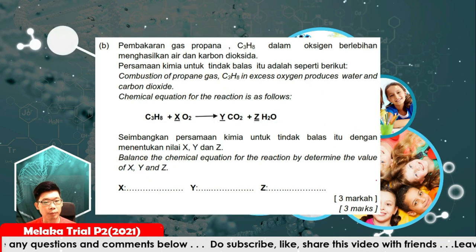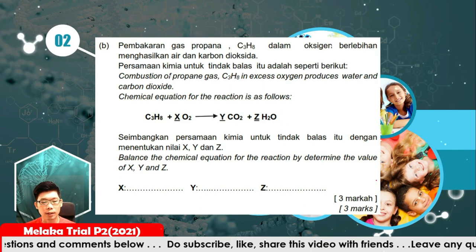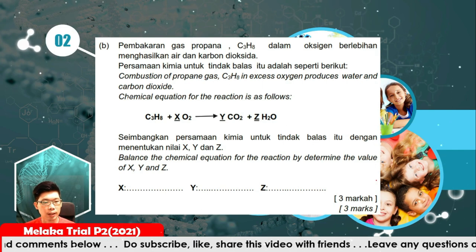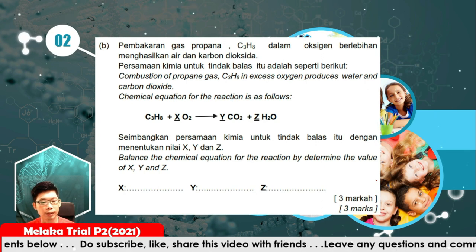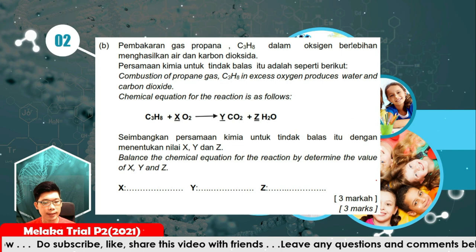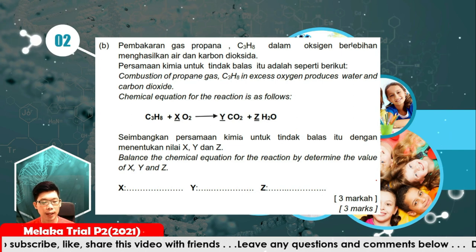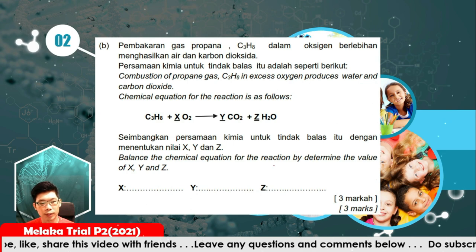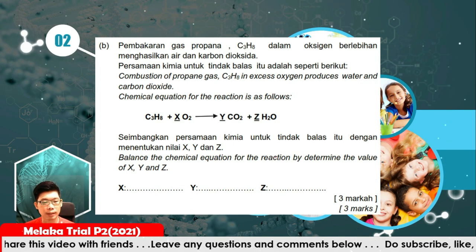Part B: combustion of propane gas C3H8 in excess oxygen produces water. The chemical equation for the reaction is given. Balance the chemical equation by identifying X, Y and Z.